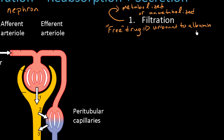Albumin itself is too big to get through, and if you see albumin in the urine, that is a problem. We frequently use albumin as a marker to determine the progression of kidney disease in diabetic patients — something called microalbuminuria, meaning small amounts of albumin in the urine. If those levels go up, we know this patient might be having kidney problems.